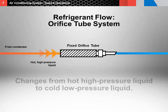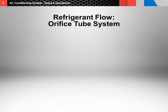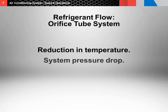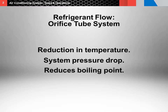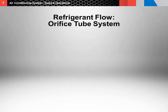As the refrigerant passes through the orifice tube, it changes from a hot, high pressure liquid to cold, low pressure liquid. The reduction in temperature of the refrigerant as it passes through the orifice tube is the direct result of the system pressure drop caused by the restriction of refrigerant flow. The lower pressure also reduces the boiling point of the refrigerant. The result: the refrigerant exits the orifice tube as a cool, low pressure liquid with a low boiling point.